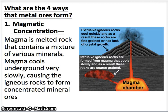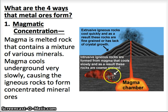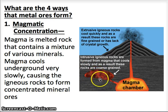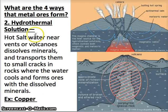Now let's talk about how these ores form. There are three types of rocks: igneous, sedimentary, and metamorphic. Igneous rocks are formed from the cooling of magma. Sometimes magma pushes into rock and cools underground — we call this intrusive igneous rock. When this happens, the rock cools very slowly, which causes certain minerals to concentrate and form metal ores.